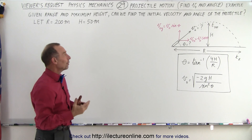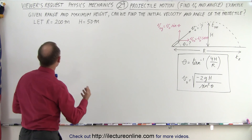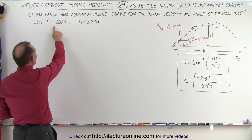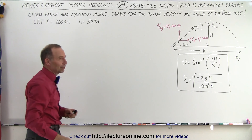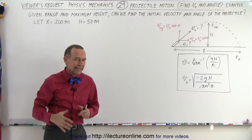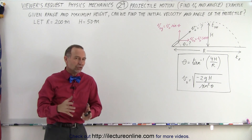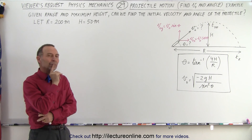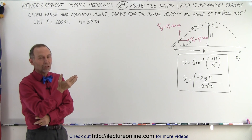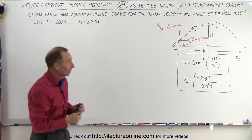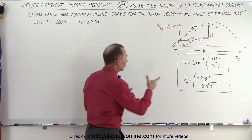So let's say that we have an example here where the range is 200 meters and the height is 50 meters. We'll get the angle and initial velocity and then we'll see if there's any limitations to this. Let's try it.